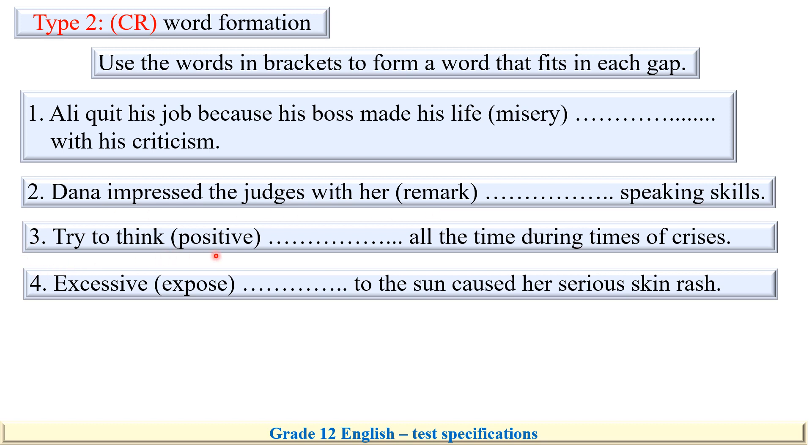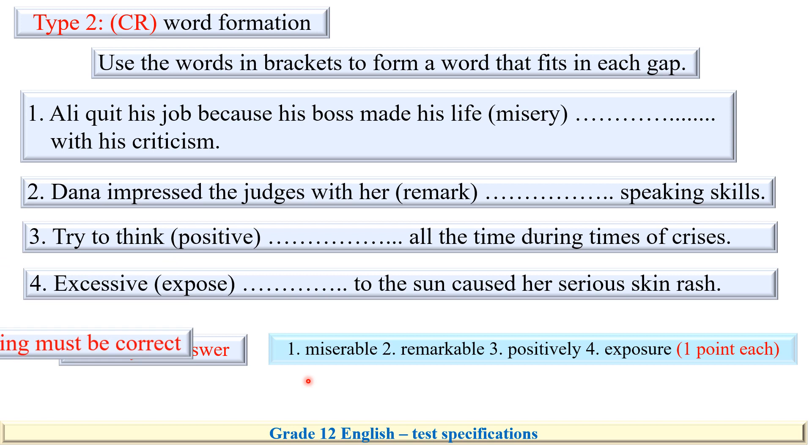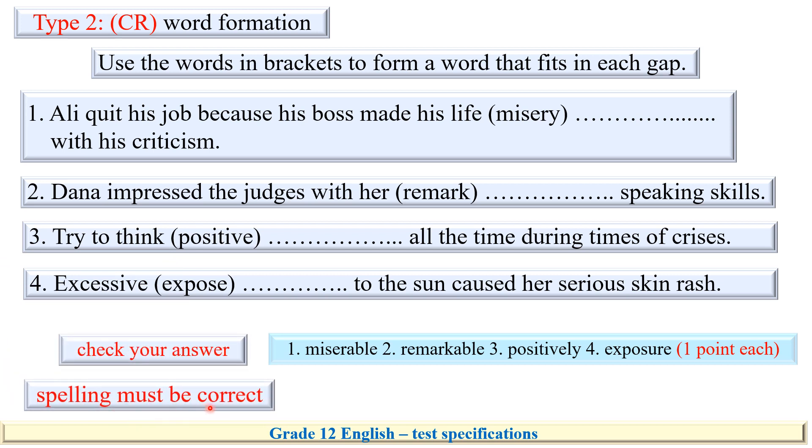Here, try to think positive. Think is a verb. What part of speech do we use to modify or describe a verb? Do we use a noun or adjective or adverb? Exactly an adverb. So what's the adverb of the word positive? Excessive exposed to the sun. Excessive is an adjective. We need to change this word expose from a verb into exactly into a noun. What's the noun of expose? Please prepare your answers on a piece of paper and take this feedback but please, please spelling here must be correct. Expose exposure.